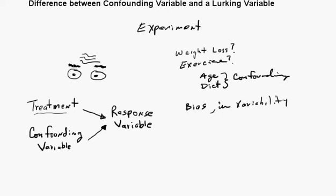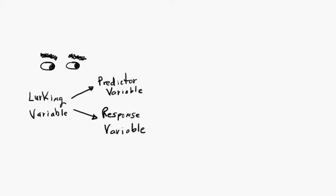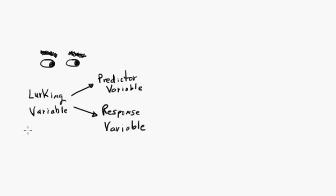Okay, so that's a confounding variable. Now, what is a lurking variable? A lurking variable is similar, but what it does is it acts on the predictor variable at the same time that it acts on the response variable.